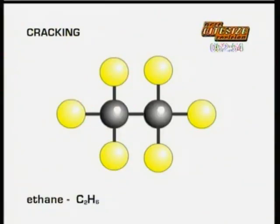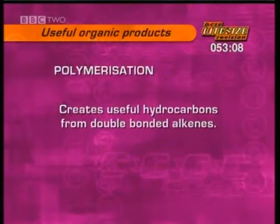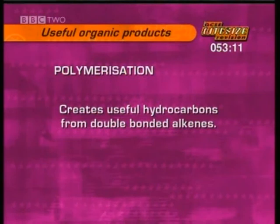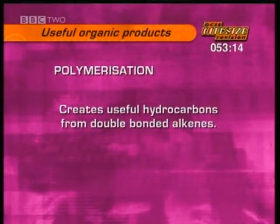One example of the cracking process is to crack ethane (C₂H₆), which has single carbon bonds, into ethene (C₂H₄), which has double carbon bonds. Ethene is a starting material for many plastics. Another process called polymerization creates useful hydrocarbons from those double-bonded alkenes.